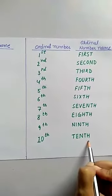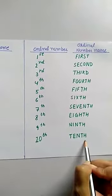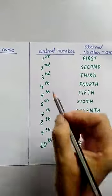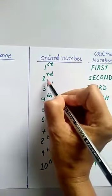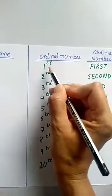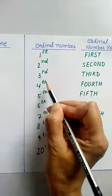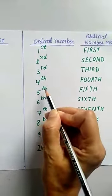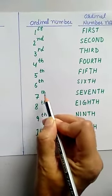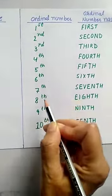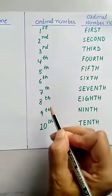And we use abbreviations also when we write the ordinal numbers. Like, first S-T, second N-D, these are abbreviations, third R-D, fourth T-H, fifth T-H, sixth T-H, seventh T-H, these are abbreviations, eighth, ninth, and tenth, all in T-H.